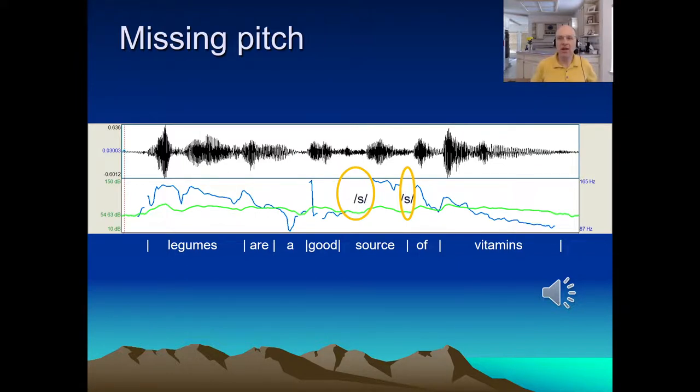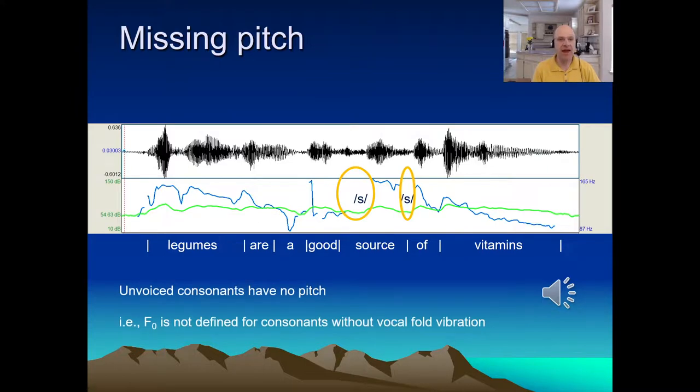So these occur at the two S sounds in source. They are unvoiced, meaning the glottis is open. The air flows out freely. There's no vibration. You can contrast that with the Z of vitamins. If you put your hand on your throat and produce an S and a Z, the latter buzzes, that's the vocal fold opening and closing. In general, unvoiced consonants just have no pitch. F0 is not defined at those points. This bothers some people. They like to smooth them and interpolate them and connect them. That can be risky.